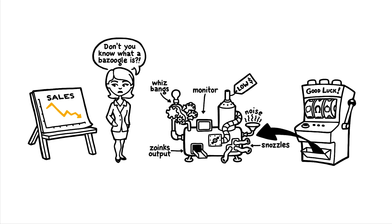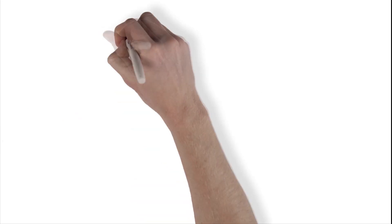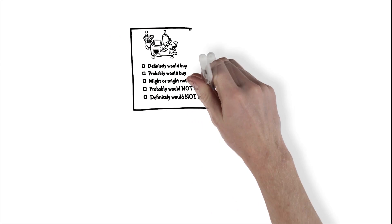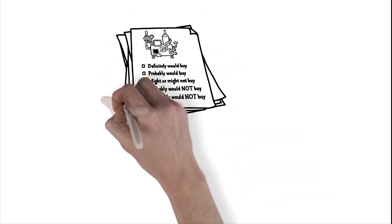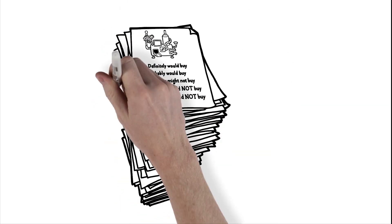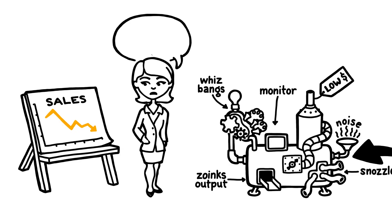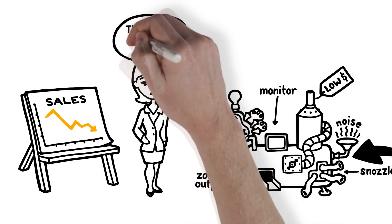Jane has some ideas that she could concept test among a sample of potential customers. She could describe potential bazoogles and ask potential customers to tell her how much they would like to buy each one. Of course, she doesn't have enough time, money, or customers to do enough of these concept tests.